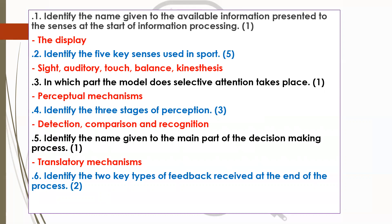Finally, the two key types of feedback received at the end of the process: once you've performed the action and the muscles have acted on the information, you then get intrinsic and extrinsic feedback to judge the success of what you've just performed. If any of that is not clear, go back over that presentation. Please make sure you've purple-penned your work and written in any corrections before we move on.